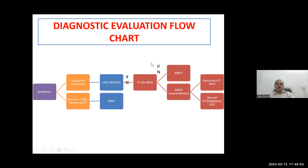Evaluation pathway: suspected cholangitis — ultrasound first; if normal, CT; if normal, MRCP; if MRCP contraindicated, ERCP. If patient is pregnant, use endoscopic ultrasound. If Charcot's triad is positive with deranged LFTs and haemodynamic instability, bypass all steps and go straight to ERCP. Moderate cholangitis: TLC more than 12,000 or less than 4,000, fever more than 102.2°F, age more than 75, total bilirubin more than 5, hypoalbuminaemia. Severe cholangitis: target organ damage — cardiovascular, neurological dysfunction, ARDS (PF ratio less than 200), AKI, hepatic dysfunction, thrombocytopenia.